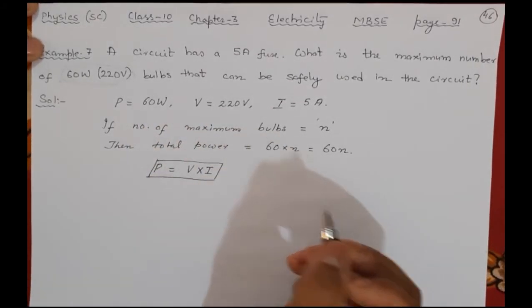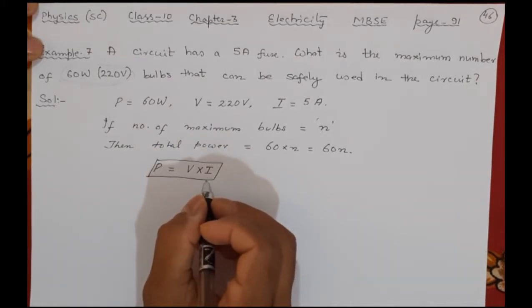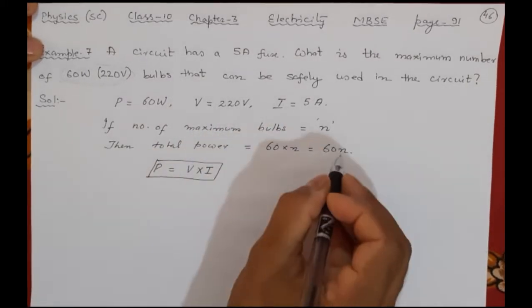You remember this is the formula we have been using in this chapter in previous examples also. So power is given, voltage is given, current is given.